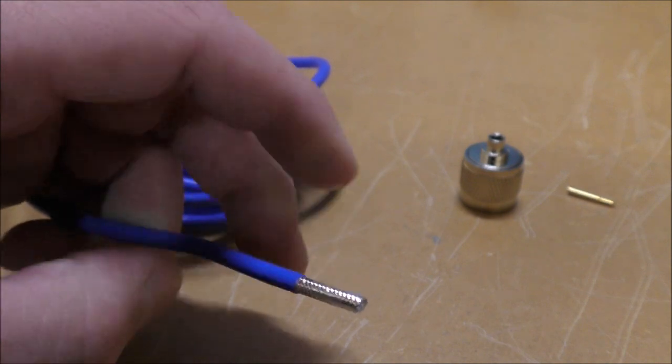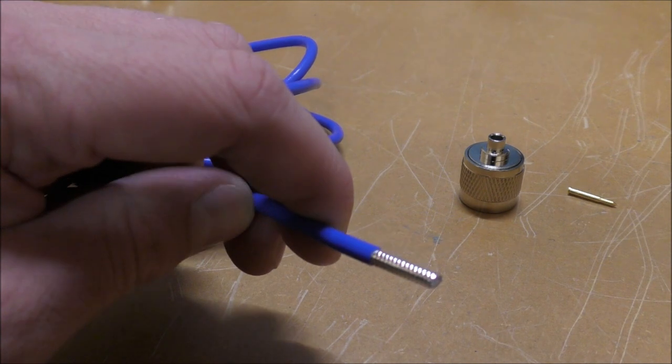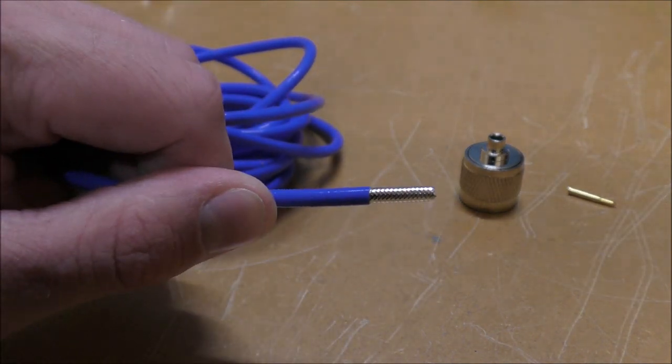And you can see it's quite rigid, that's the reason it's called hardline. You can bend it into all sorts of shapes and it'll keep its shape quite well. Very handy for microwaves.